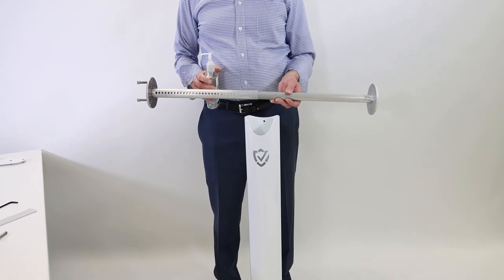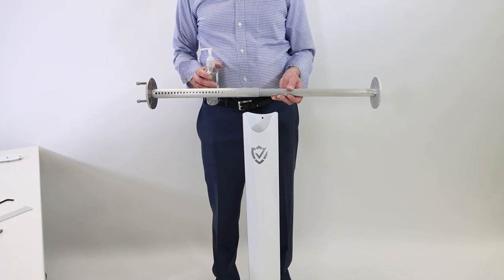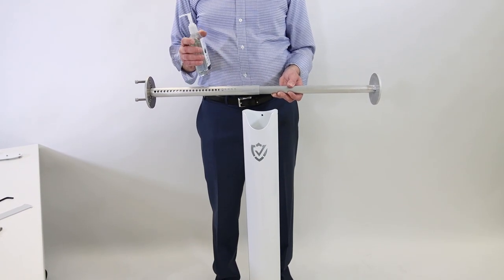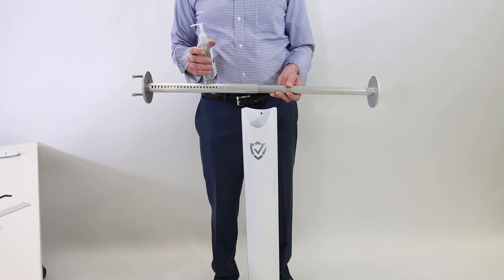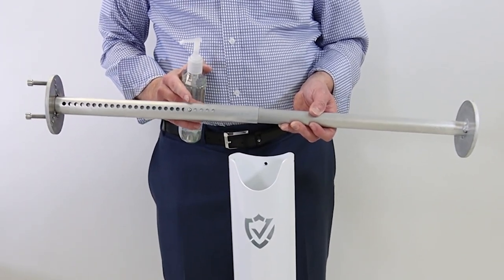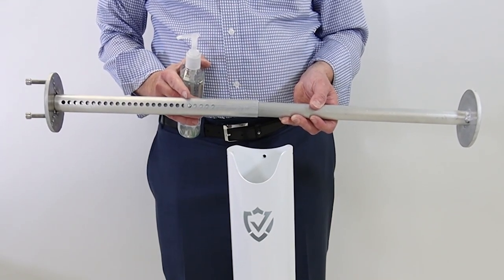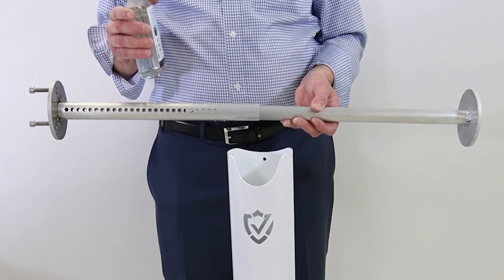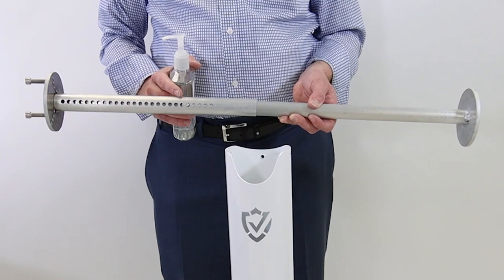Now we're going to take the piston and put it into the main tube. Before we do that, we're going to look at the bottle size that we're going to be using. You'll see these adjustable holes here with your pin. Our suggestion is that you start around hole number five when you're using a standard 12 ounce bottle of hand sanitizer.